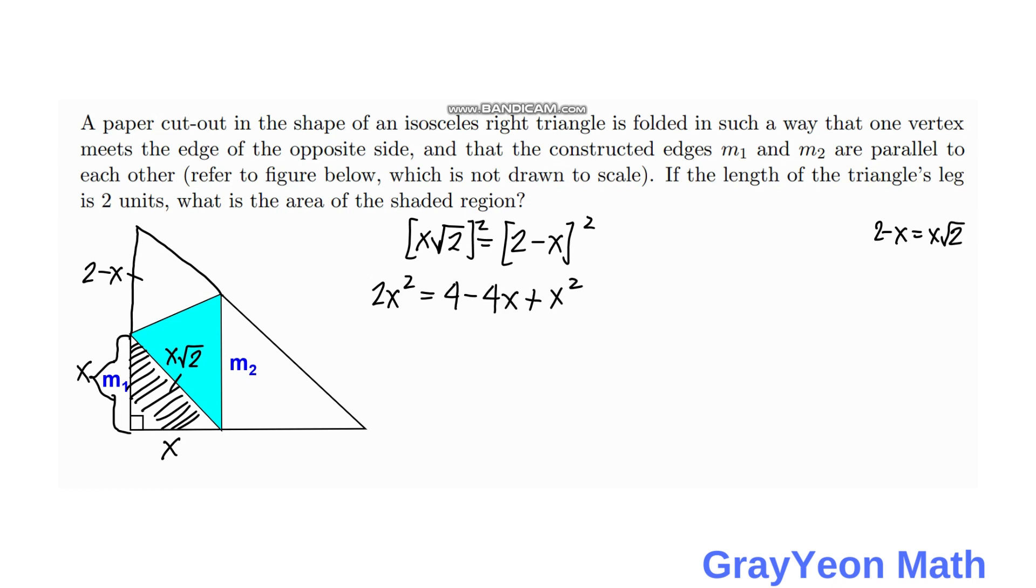Then we simply put all the terms on the right-hand side to the left-hand side. Then we have x² plus 4x minus 4 is equal to 0.